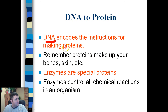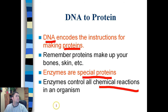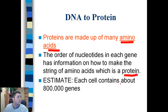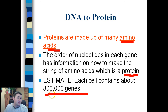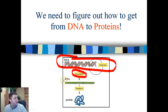Each new DNA molecule consists of one original strand and one new strand — the original is shown in dark blue and the new one in light blue. DNA codes for making proteins, and enzymes are special proteins that control all chemical reactions. Each cell contains about 8,000 genes, meaning it's responsible for making about 800,000 different proteins. We go from DNA, transcribe it into RNA, and eventually translate it into protein.